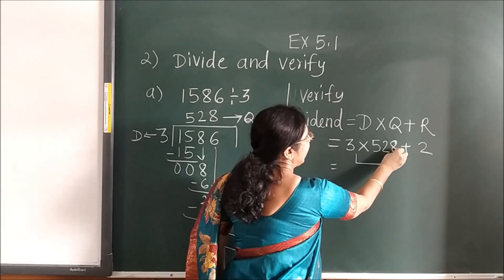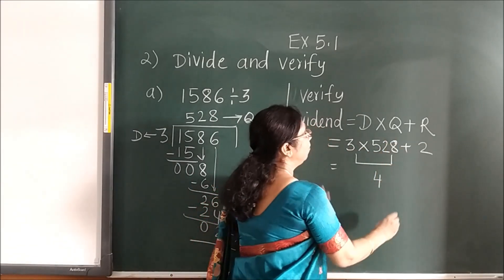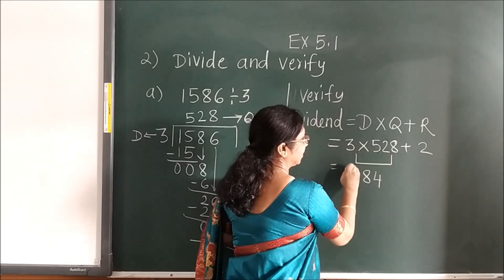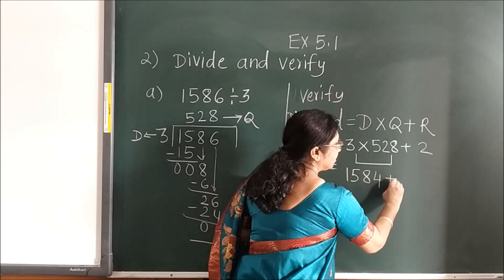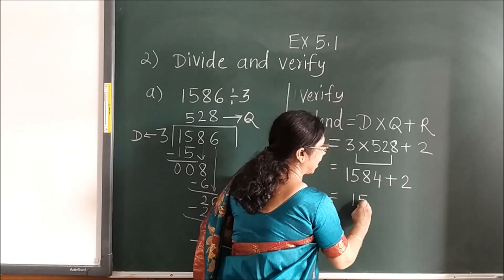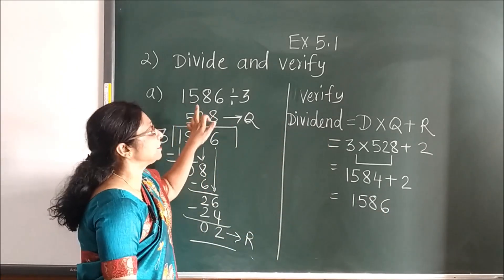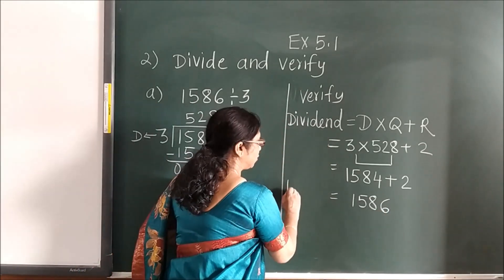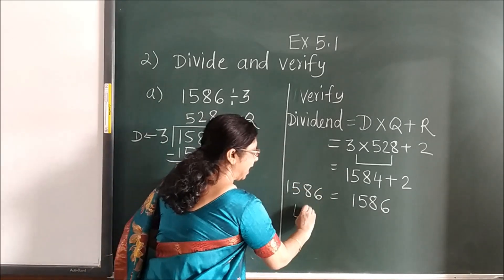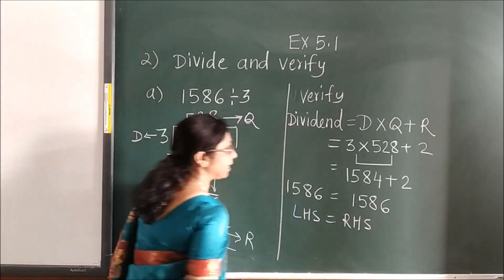Now first carry out the simple multiplication. 8 threes are 24 — write 4, carry 2. 3 twos are 6, that gives 8. 3 fives are 15 plus 2 gives 17. When you add 1, 5, 8, 6 — you get 1586. And 1586 is our dividend also. That means it is verified — LHS is equal to RHS. Hence verified.